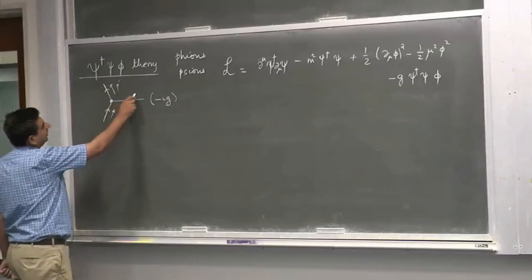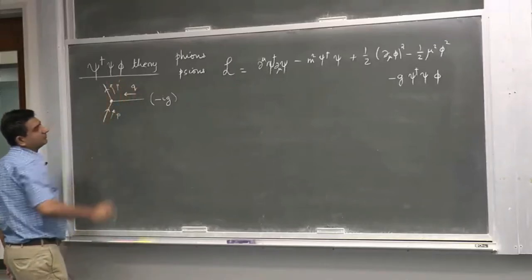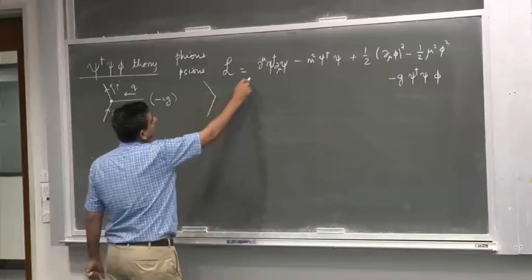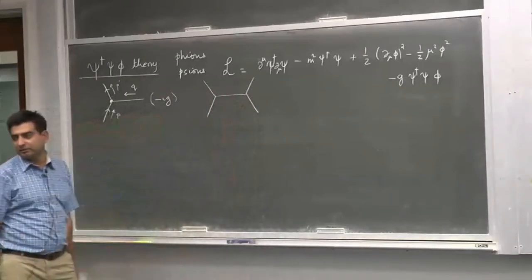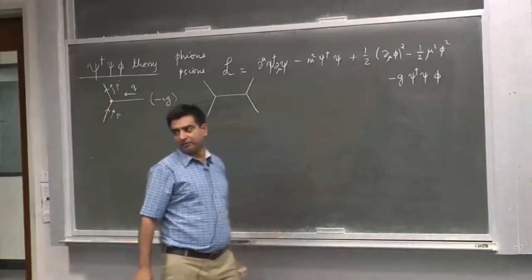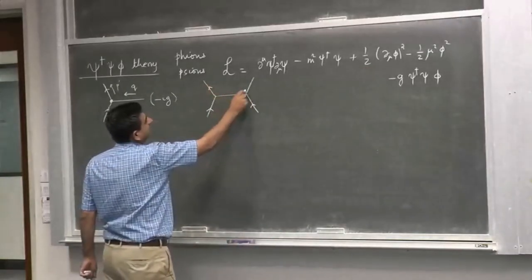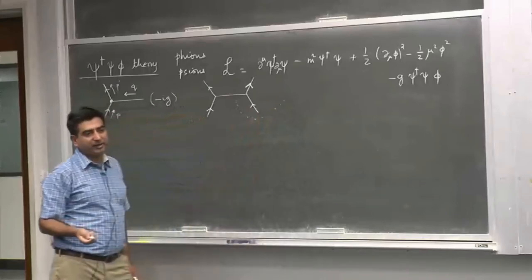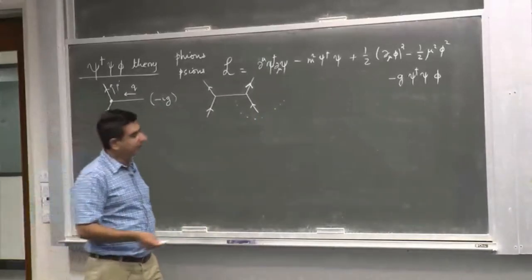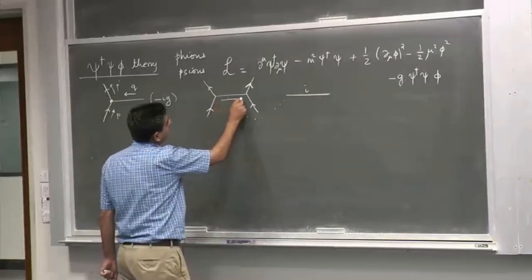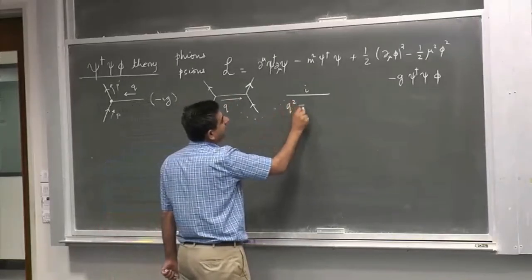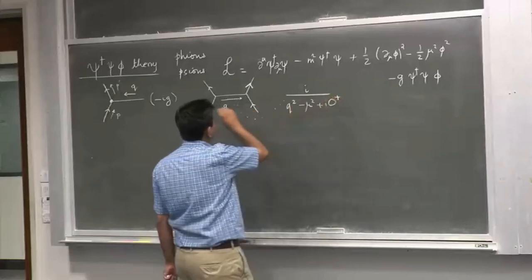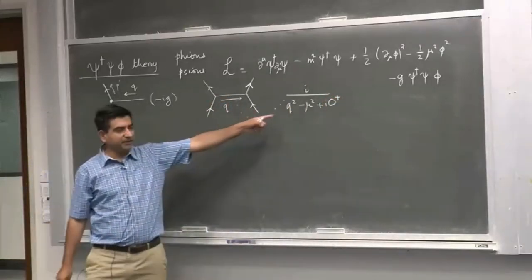We can draw momenta on the legs of the Feynman diagram. This is P, P-prime, and Q here, with P-prime equal to P plus Q. Another rule: if I have an internal bosonic line corresponding to a free scalar particle, the corresponding propagator is i over (Q² − μ²), where μ is the mass of the φ-on, plus an iε term.